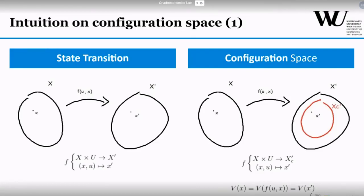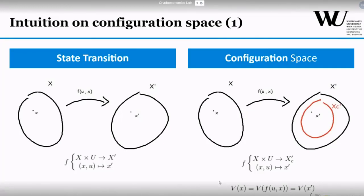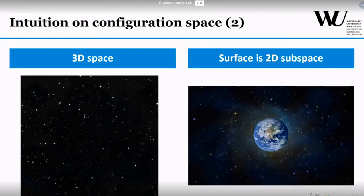This configuration space assures you cannot land in unintended states, driving the system in one particular direction. This is possible because you introduce invariant properties — conditions that all future and previous states must fulfill. Think of the Bitcoin network: the invariant is that the total token supply is kept constant. All interactions must respect the restriction that the sum of account balances equals one specific number.